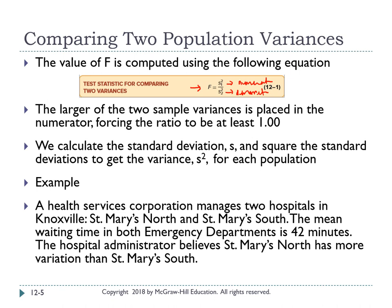Let's look at an example. A health services corporation manages two hospitals, St. Mary's North and St. Mary's South. The median waiting time in both emergency departments is about 42 minutes. The hospital administrator believed that St. Mary's North has more variation than St. Mary's South. If you see the word 'variation', we are talking about variance, and variance means we have to use ANOVA.